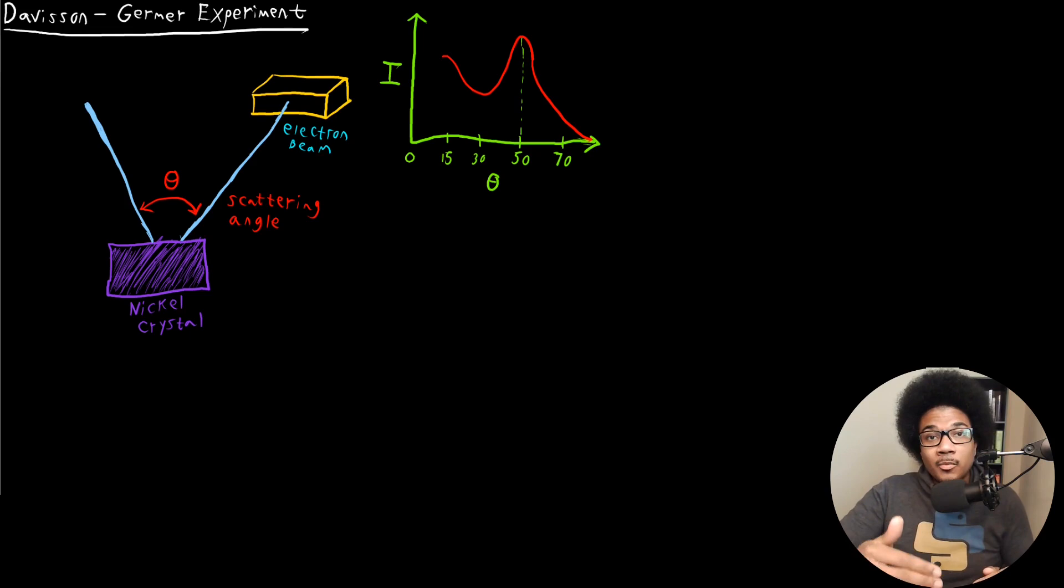The Davison-Germer experiment really proves the other half of that, or provides experimental evidence for that second half of the wave-particle duality. It shows that particles can have wave-like properties. So let's look at this Davison-Germer experiment.